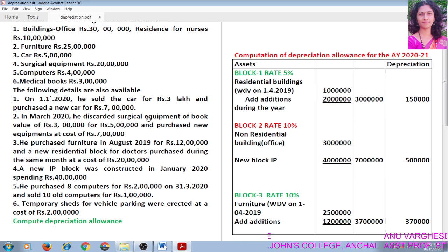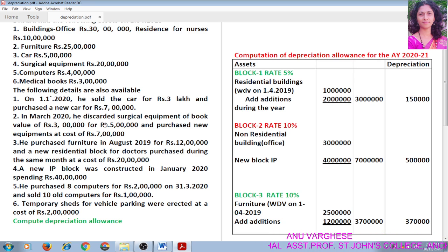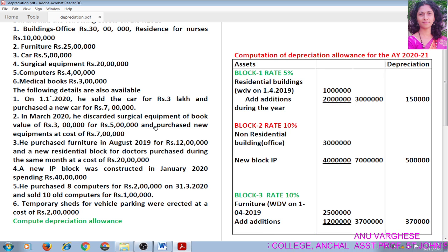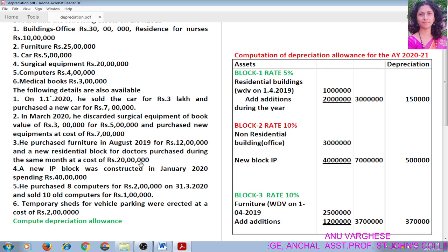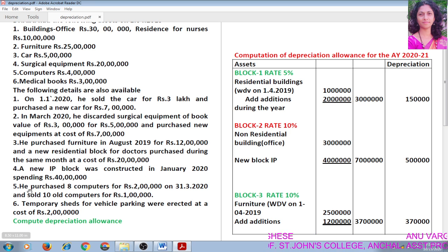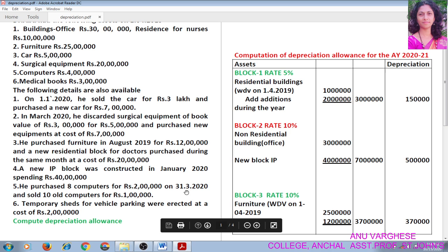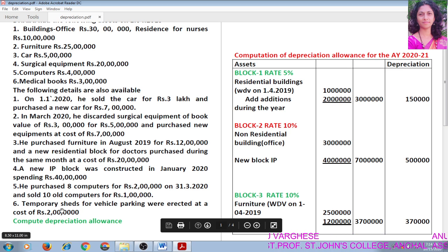The following details are also available. On 1-1-2020, he sold the car for Rs. 3 lakh and purchased a new car for Rs. 7 lakh. In March 2020, he discarded surgical equipment of book value of Rs. 5 lakh and purchased new equipment at cost of Rs. 7 lakh. He purchased furniture in August 2019 for Rs. 12 lakh and a new residential block for doctors purchased during the same month at cost of Rs. 20 lakh. A new IP block was constructed in January 2020, spending Rs. 40 lakh. He purchased 8 computers for Rs. 2 lakh on 31-3-2020 and sold 10 old computers for Rs. 1 lakh. Temporary sheds for vehicle parking were erected at a cost of Rs. 2 lakh.